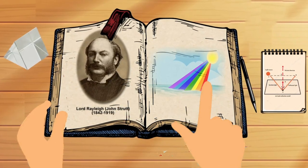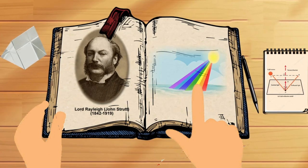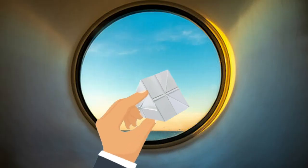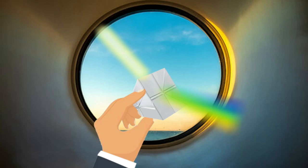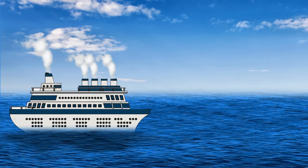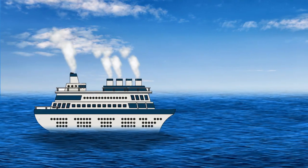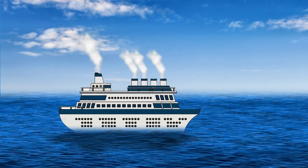Raman was not satisfied with this explanation of Lord Rayleigh and started his experiment on the scattering effect of light on the ship with the help of a prism when returning from England. Raman continued his research on the scattering effect of light after coming to India.